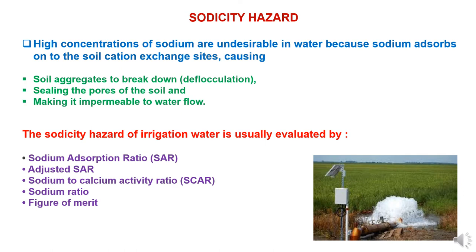Sodicity hazard. Sodicity is the presence of a high proportion of sodium ions relative to other cations. High concentration of sodium is undesirable in water because sodium adsorbed on soil cation exchange sites may result in aggregate breakdown where clay particles separate from each other — known as deflocculation. There will be sealing of pores of soil, sodium leaching is blocked, and there will be impermeability of water flow. The sodicity hazard of irrigation water is evaluated by sodium adsorption ratio SAR, adjusted SAR, sodium to calcium activity ratio, sodium ratio, and figure of merit.